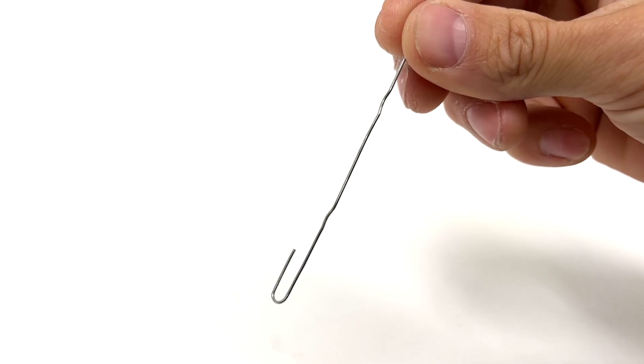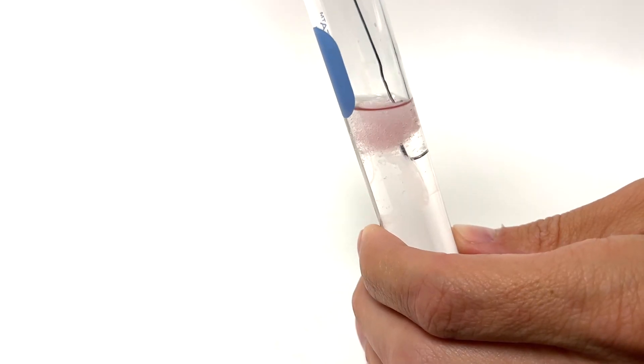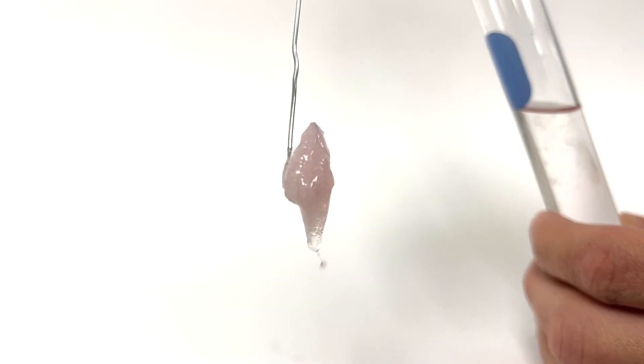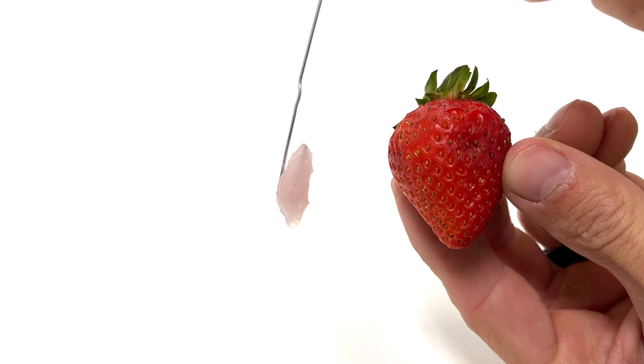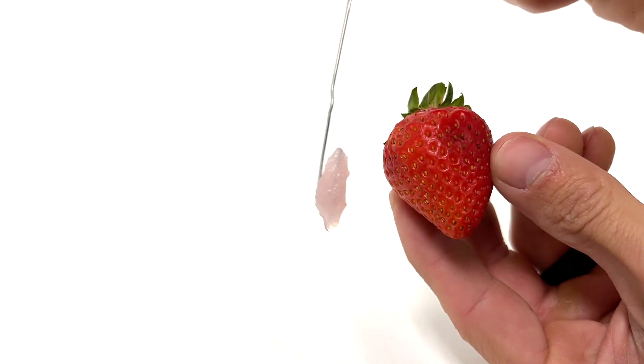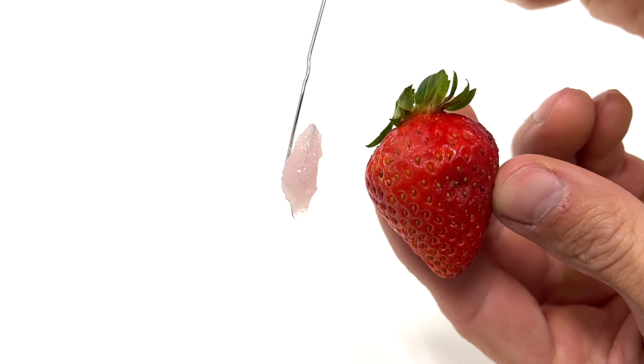It's fun to take a paper clip and bend it into a hook in order to take a closer look at the DNA. This lab is always a hit and it still to this day amazes me how easy it is to actually get the DNA out of a strawberry.